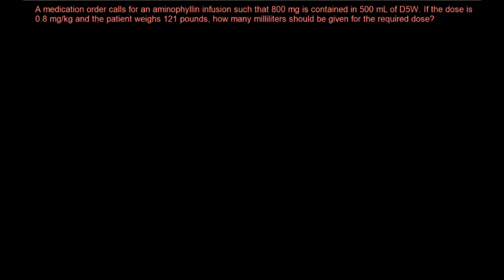Hello everyone and welcome to another dose calculation question. In this problem, a medication order calls for an aminophylline infusion such that 800 milligrams is contained in 500 mL of D5W. If the dose is 0.8 milligrams per kg and the patient weighs 121 pounds, how many milliliters should be given for the required dose? We can solve this question in two simple steps.